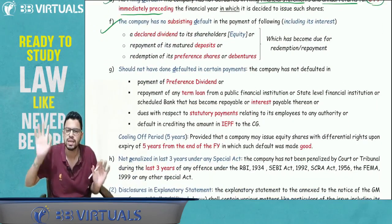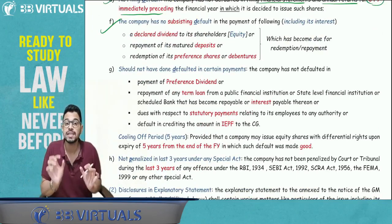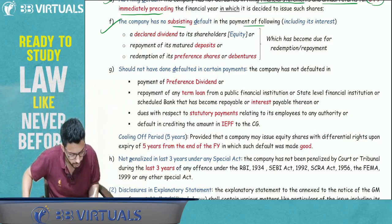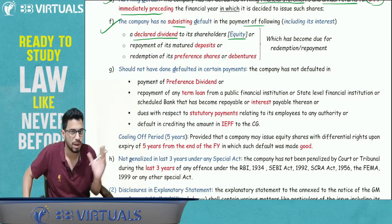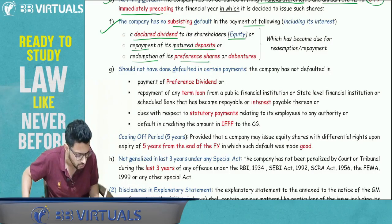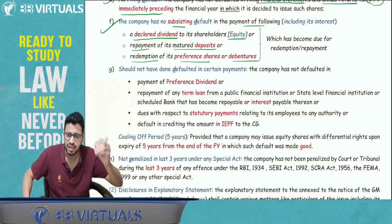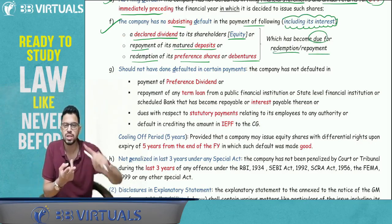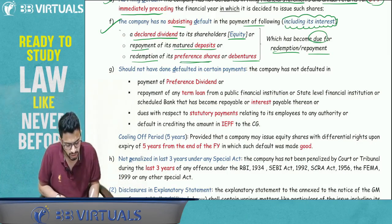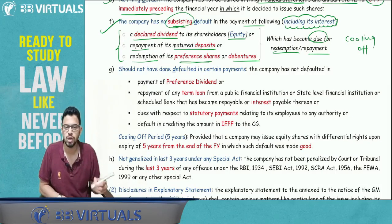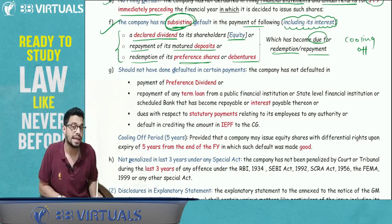Condition 5 — No subsisting default: 'Subsisting' is a very important legal word meaning a currently pending default. If you correct the default today, you can issue the shares tomorrow — there is no cooling-off period for this condition. There should be no subsisting default in payment of: declared dividend (equity dividend — preference dividend doesn't need declaration), repayment of matured deposits or their interest, redemption of preference shares or debentures including their interest.